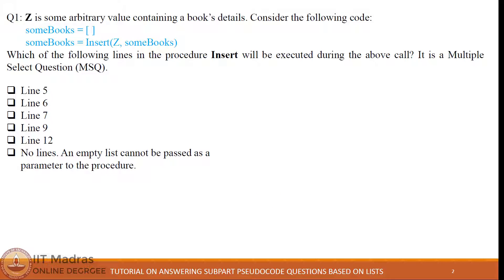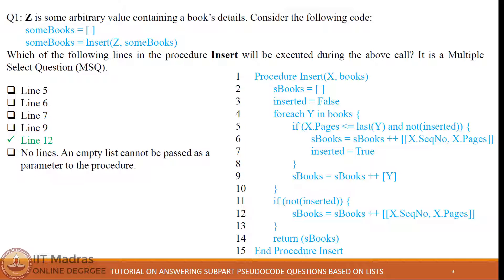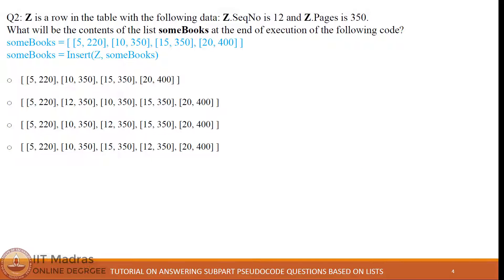Question 1: z is some arbitrary value containing a book's details. Consider the following code — some_books is equal to empty list, some_books is equal to insert(z, some_books). Which of the following lines in the procedure insert will be executed during this call? Since some_books is an empty list, the for-each block will not execute and the variable inserted will remain false. Hence the if condition in line 11 will be true and line 12 will execute.